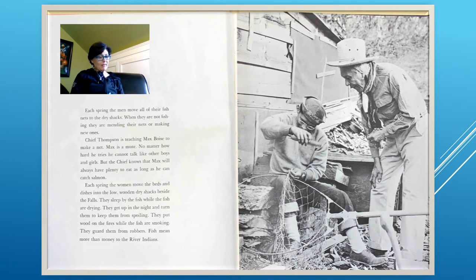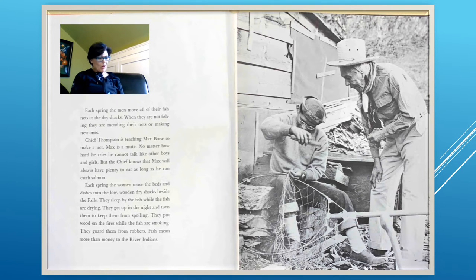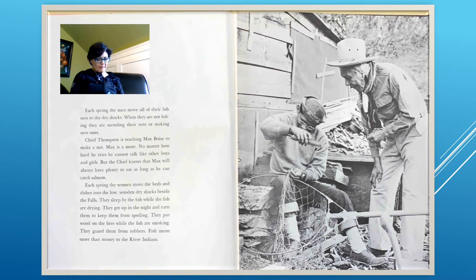Each spring the men move all of their fish nets to the dry shacks. When they are not fishing, they are mending their nets or making new ones. Chief Thompson is teaching Max Boise to make a net. Max is a mute — no matter how hard he tries, he cannot talk like the other boys and girls. But the chief knows that Max will always have plenty to eat as long as he can catch salmon. Each spring, the women move beds and dishes into the dry shacks, sleeping by the fish while it dries, turning it at night, and guarding it from robbers.